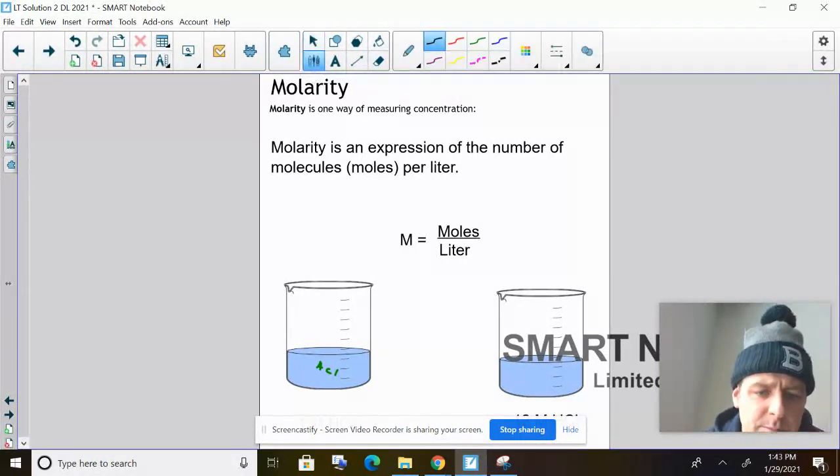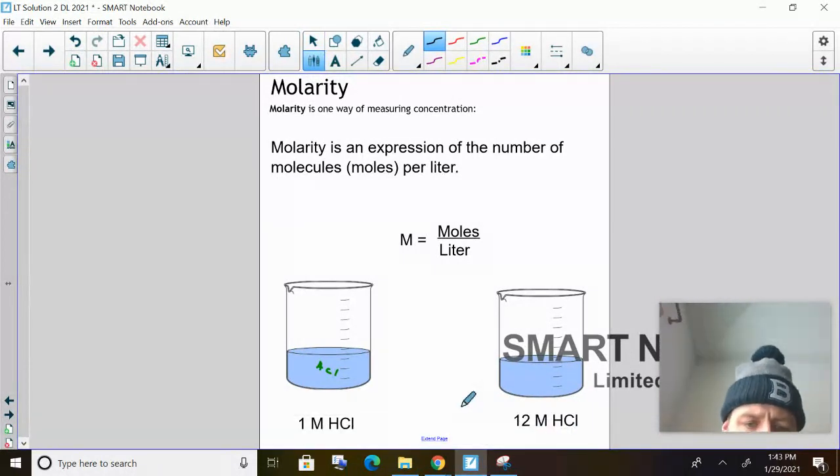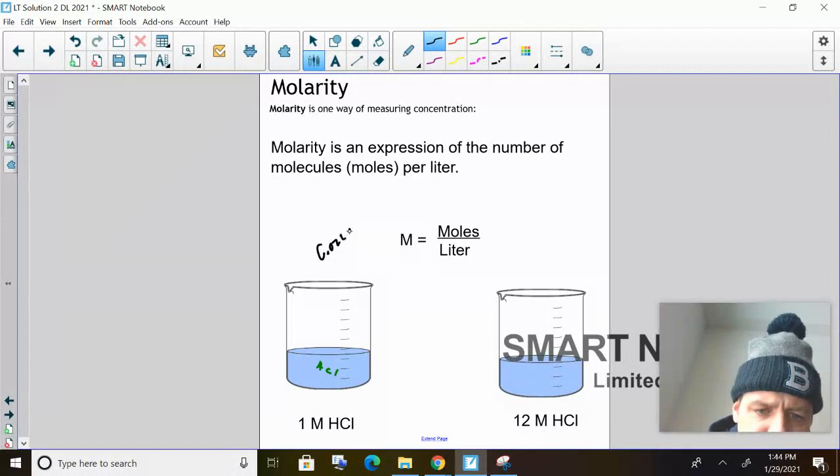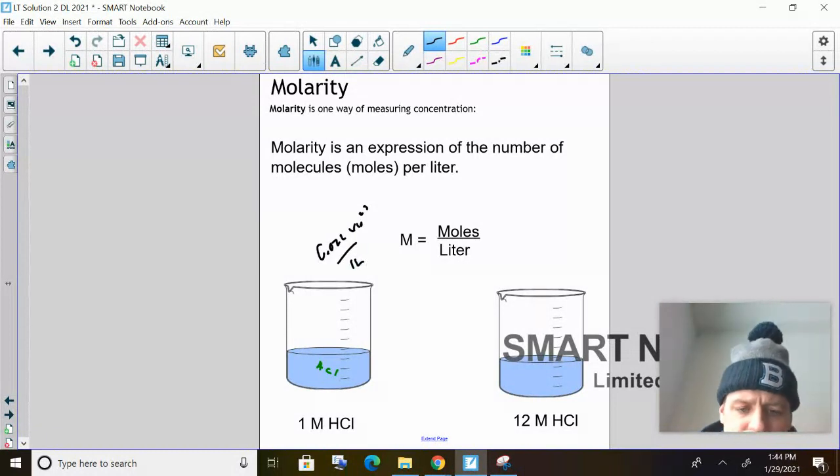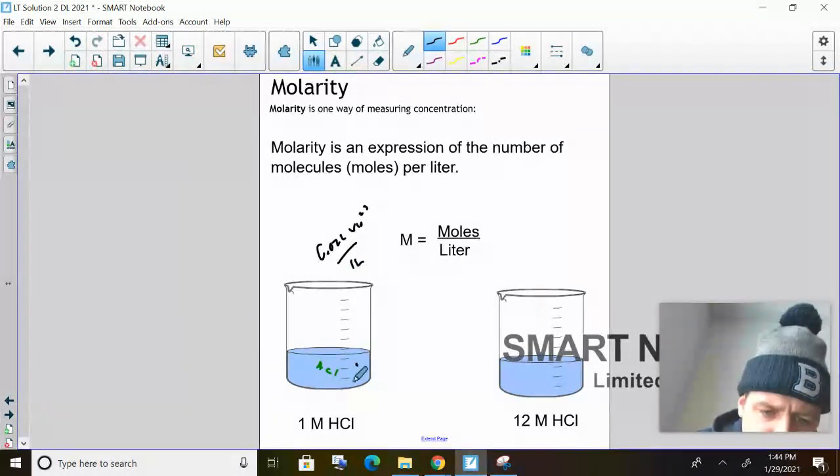If you look at these beakers down here, let's hide this. If I had a one molar solution of HCl, basically what I'm saying is that you got 6.022 times 10 to the 23rd molecules for every one liter. So you just would have a bunch of molecules here floating around.